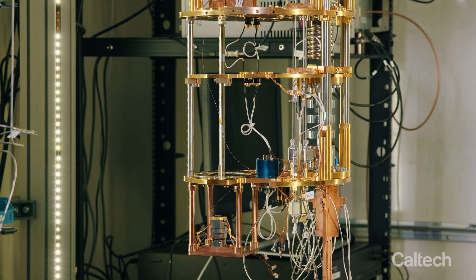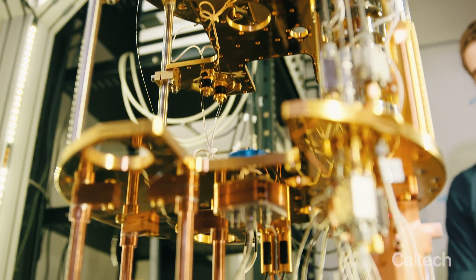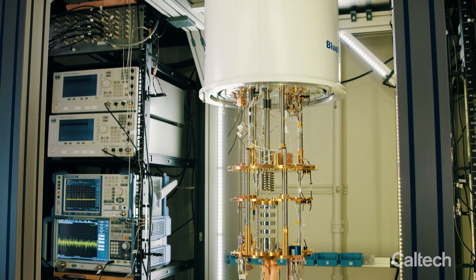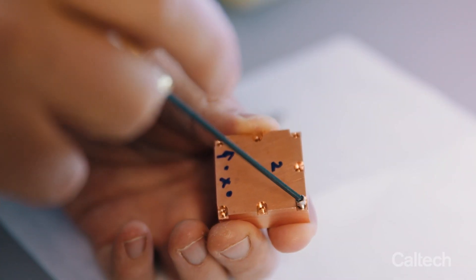The gold system behind me is what's called the dilution refrigerator. This allows us to cool samples down to 10 millikelvin or so, so a few thousandths of a kelvin above absolute zero. And at those temperatures, you remove most of the environmental noise that might perturb the quantum system you want to study.